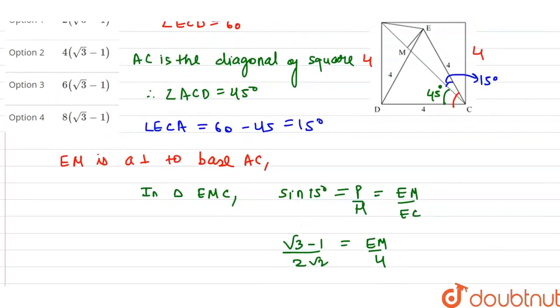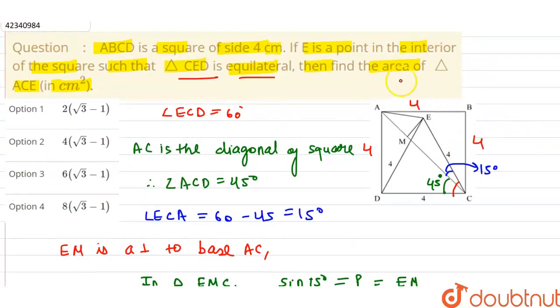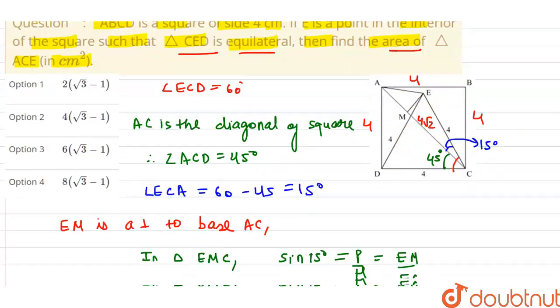So this is EM. Now let's see, we need to find the area of this triangle ACE. Area of triangle is half into base into height. The base is AC and height is EM. And what is AC? AC is diagonal. And what is the value of the diagonal? Because it gives us a 4 by 4 square, so it's 4√2 by Pythagoras theorem.